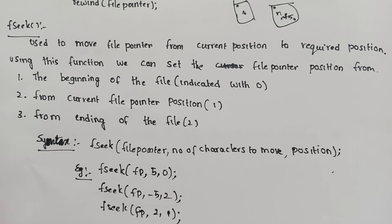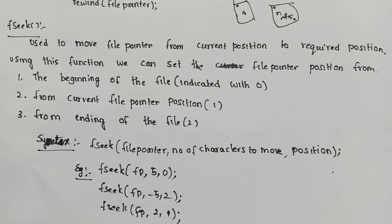So these three predefined functions — ftell, rewind, and fseek — are used for random access to files in C programming.